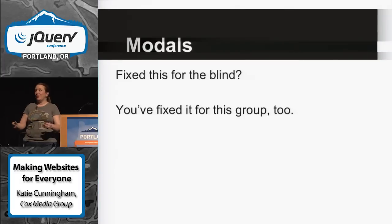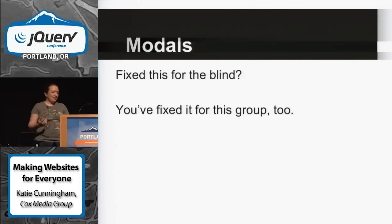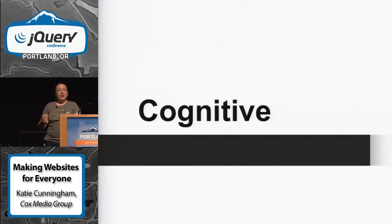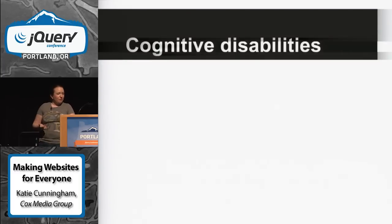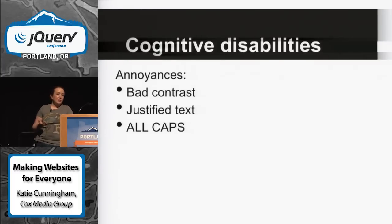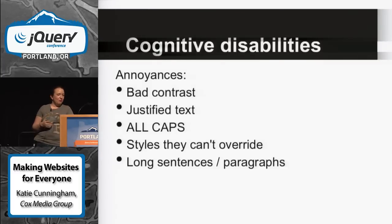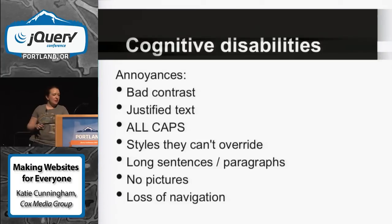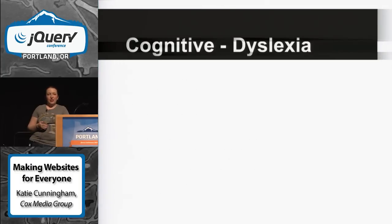This is one of the nice benefits: if you fix it for one group, you often fix it for another group too. This is one of the few places where you fix it for one person and you don't screw it up for everybody else. Cognitive groups — their annoyances: bad contrast, justified text, all caps, overriding styles, lengthy text, no pictures, and loss of navigation.